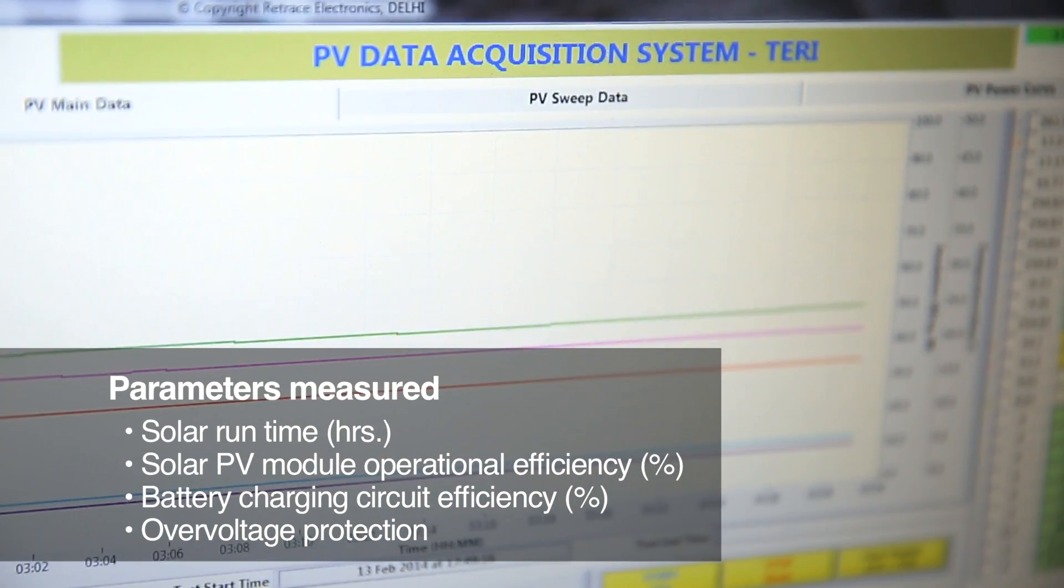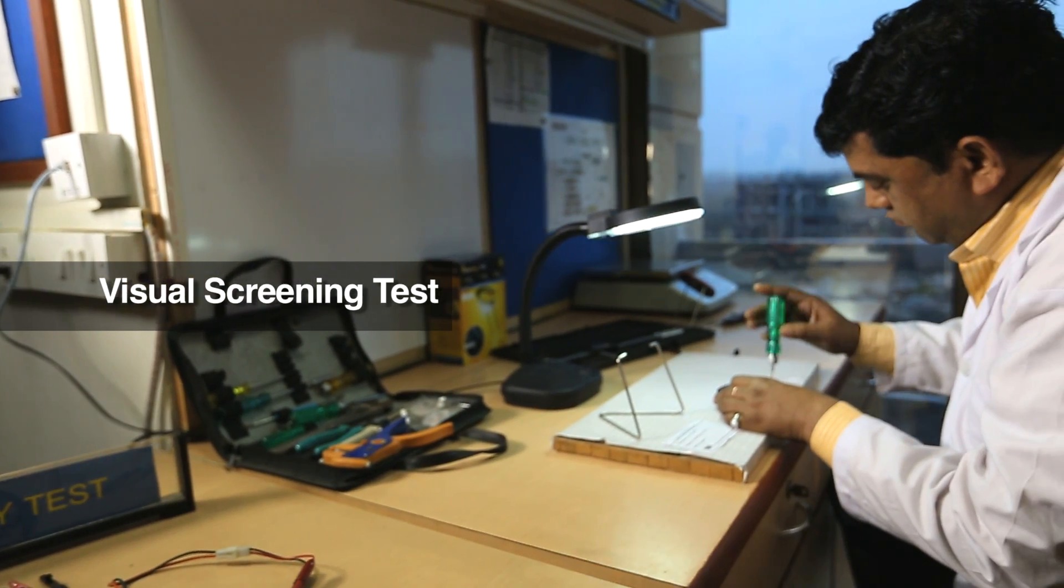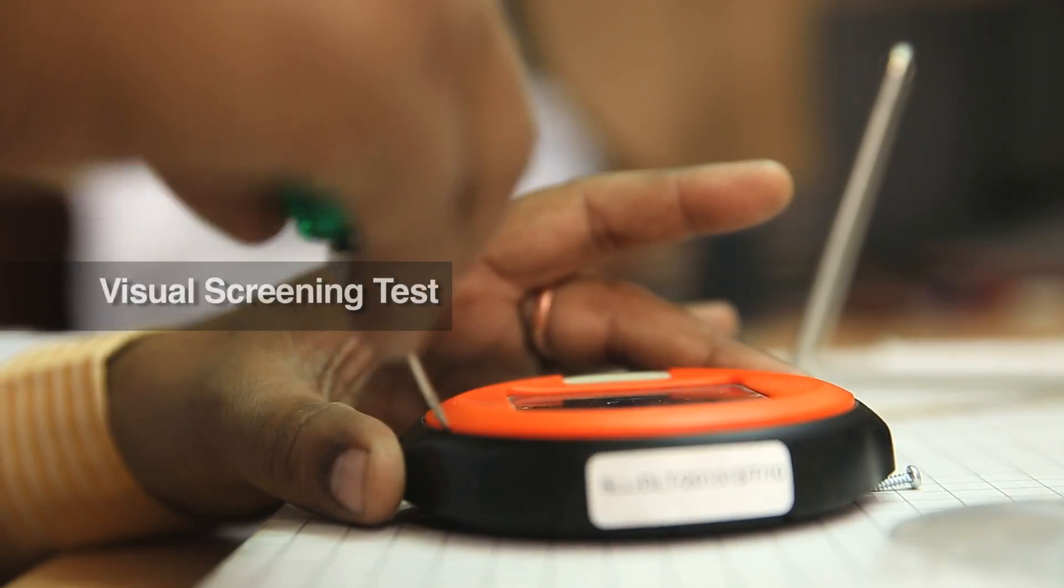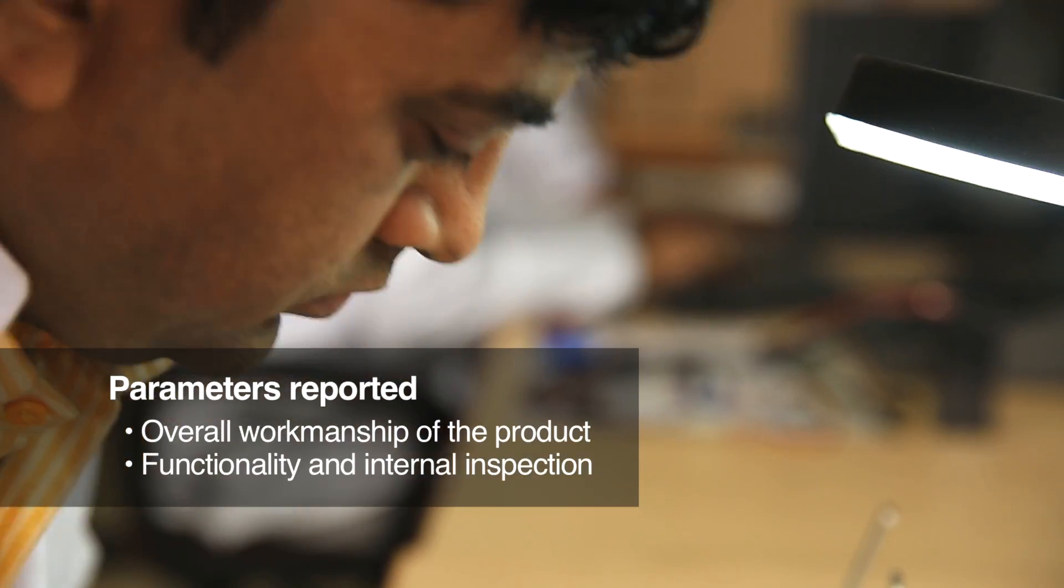The main purpose of the visual screening test is to check the overall workmanship of the lighting system.